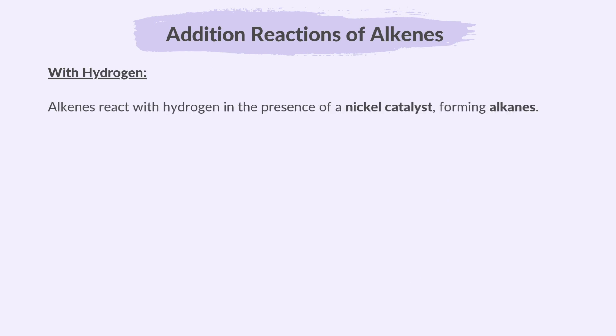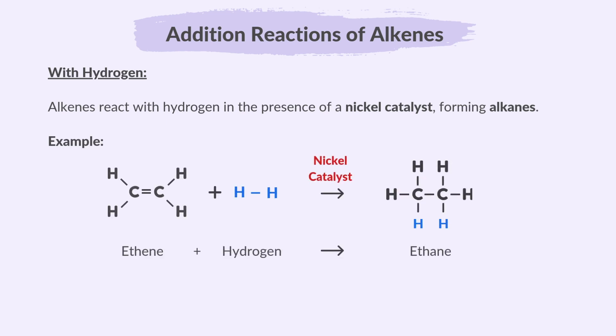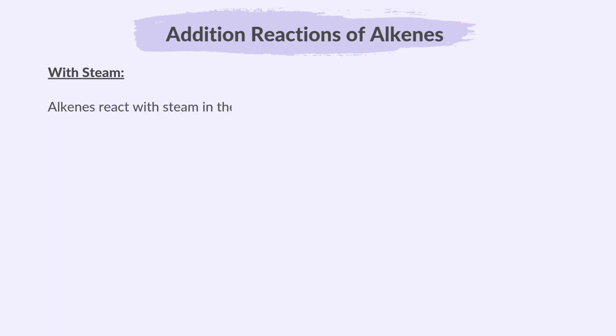Alkenes react with hydrogen in the presence of a nickel catalyst, forming alkanes. For example, ethene reacts with hydrogen to form ethane. So if propene reacts with hydrogen, it forms propane, while butene reacts with hydrogen to form butane, and so forth.